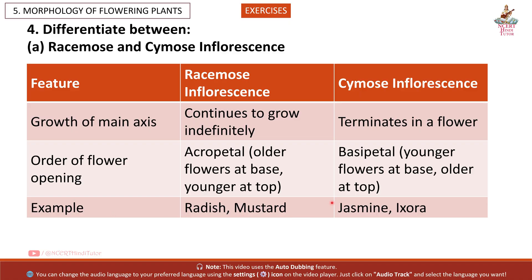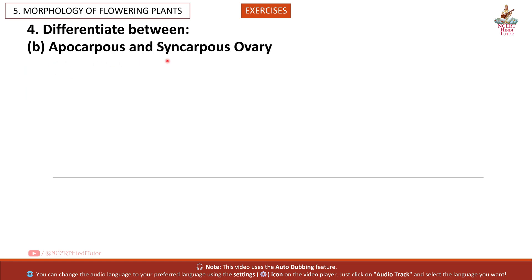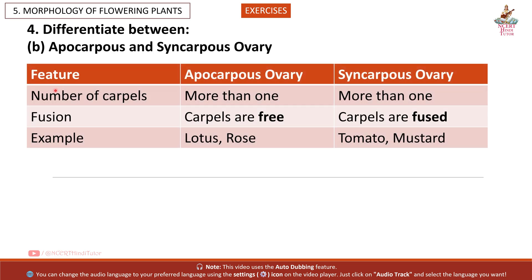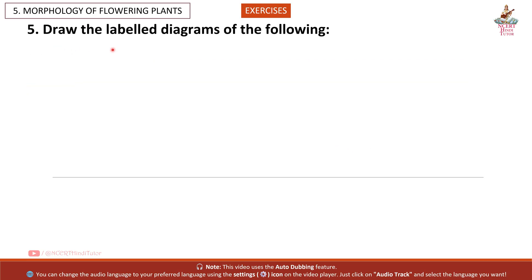Cymose example: jasmine, Ixora. (b) Apocarpous and Syncarpous ovary. Feature — Number of carpels: both have more than one. Fusion: Apocarpous — carpels are free; example: lotus, rose. Syncarpous — carpels are fused; example: tomato, mustard.